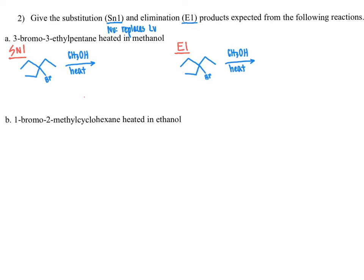In the E1 reaction, the nucleophile, rather than attacking a carbon atom, is going to act as a base — bases grab protons. It is going to eliminate that proton and the leaving group from the molecule to yield an alkene product.